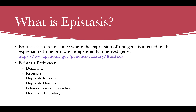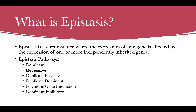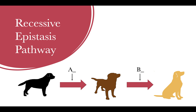Epistasis. The first question you might have is: what is epistasis? Epistasis is a circumstance where the expression of one gene is affected by the expression of one or more independently inherited genes. There are six types of epistatic interactions, but for this video we will just focus on the single recessive pathway.